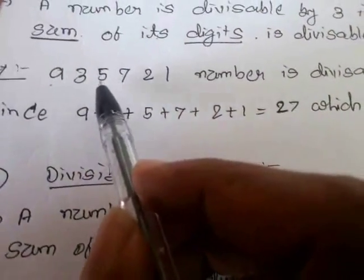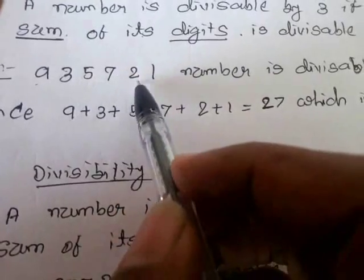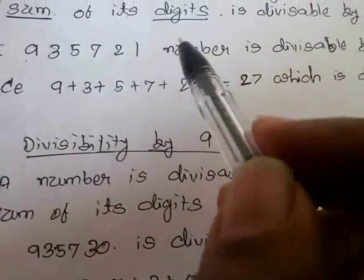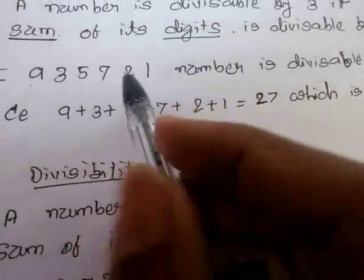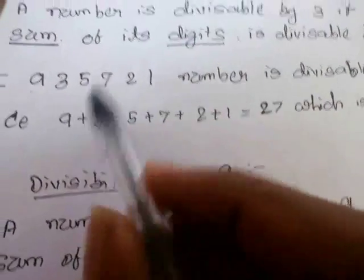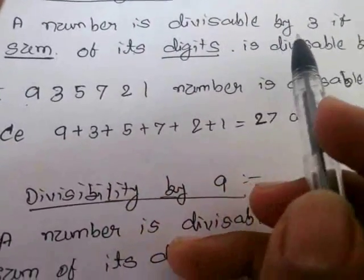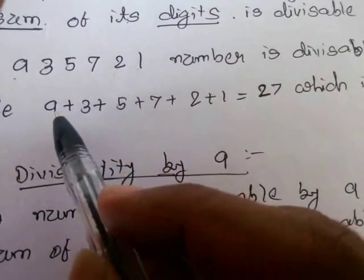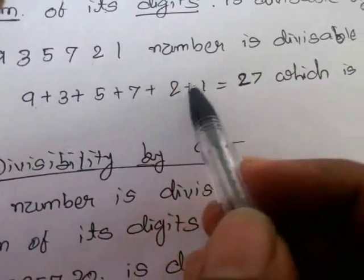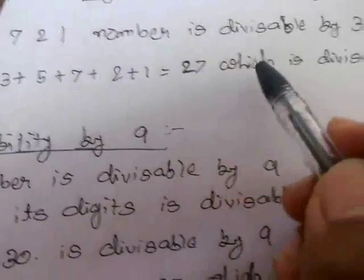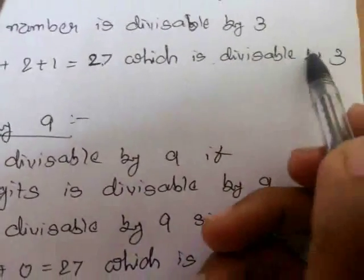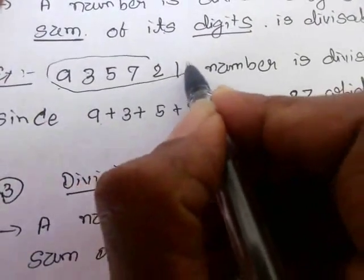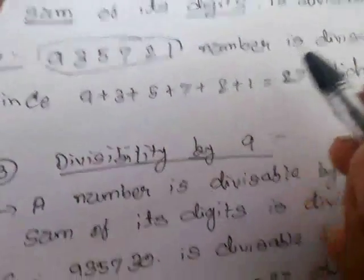Let's take an example: 9,35,721. This number is divisible by 3. The sum of its digits is 9 plus 3 plus 5 plus 7 plus 2 plus 1, which gives us 27. And we know that 27 is divisible by 3, so we can say the whole number is divisible by 3.